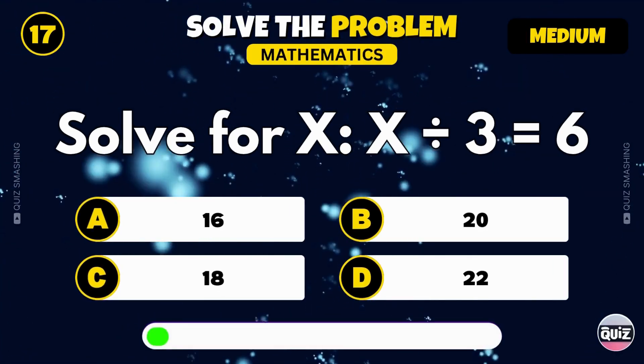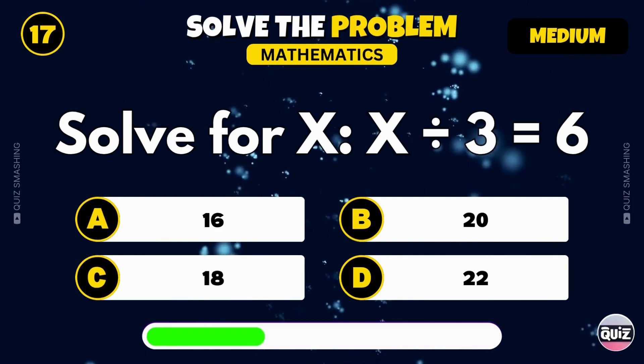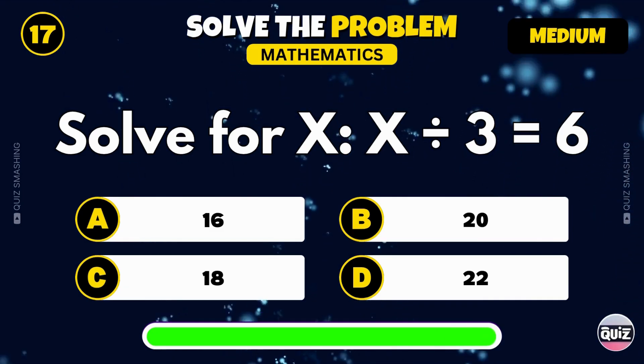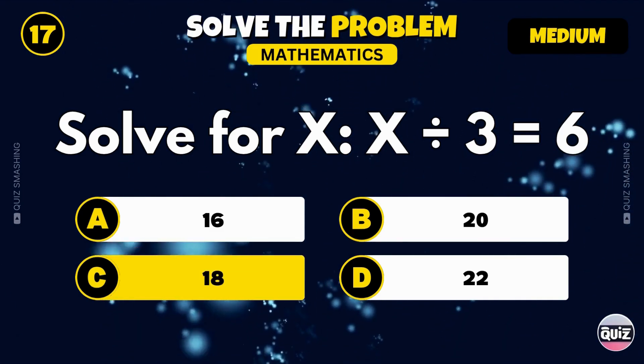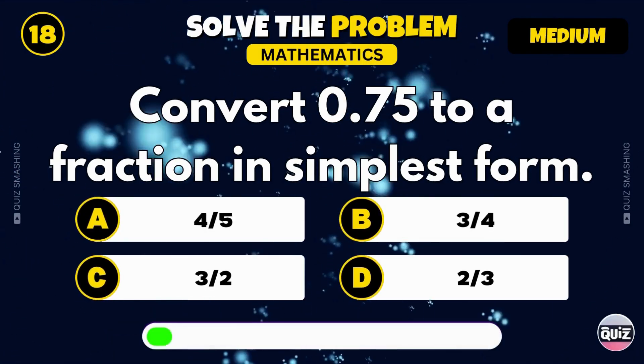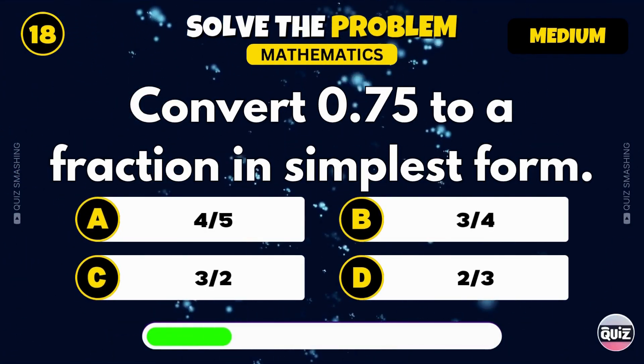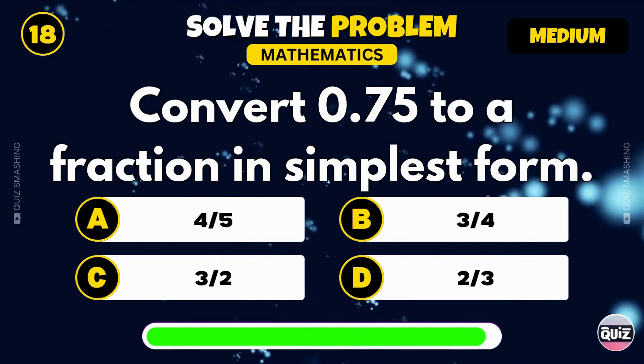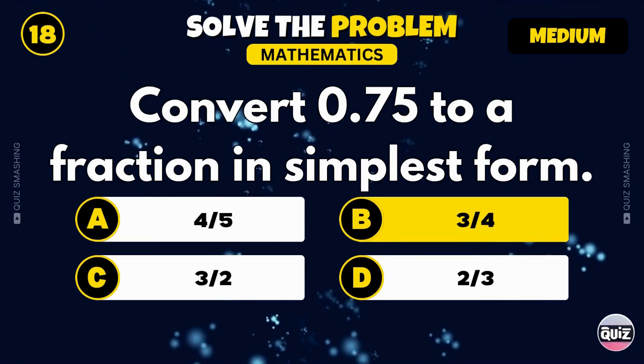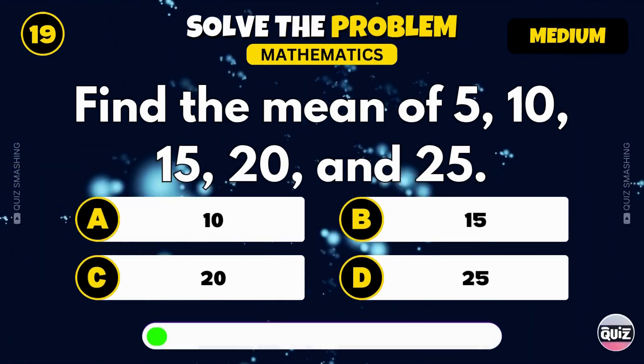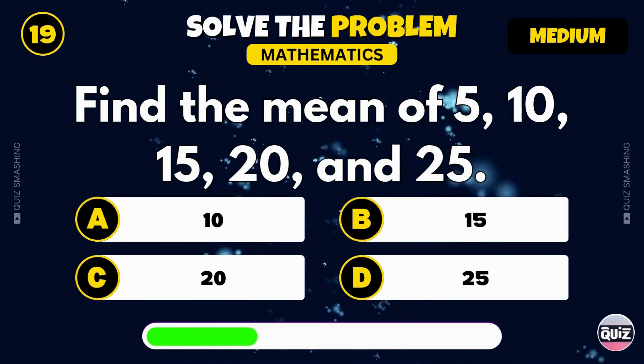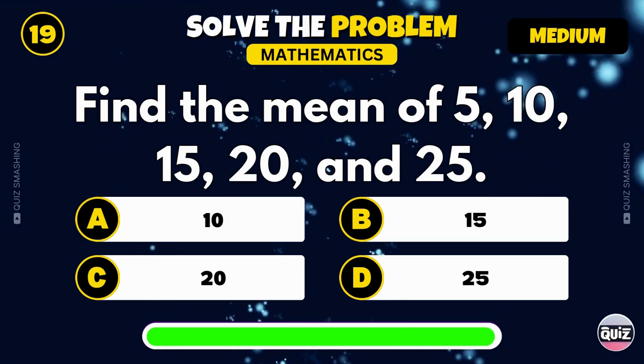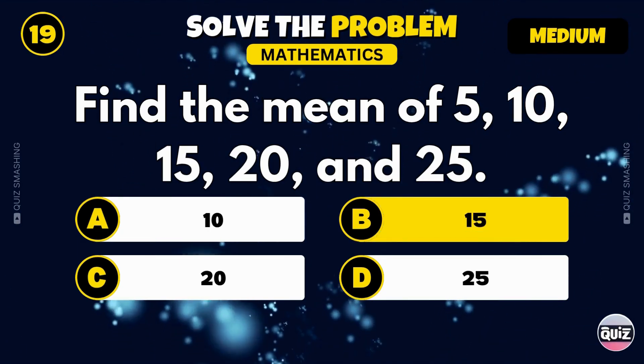Solve for x: x divided by 3 equals 6. Exactly, x equals 18. Convert 0.75 to a fraction in simplest form. That's 3 over 4. Find the mean of 5, 10, 15, 20, and 25. Well done, the mean is 15.